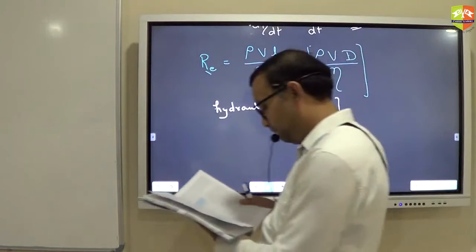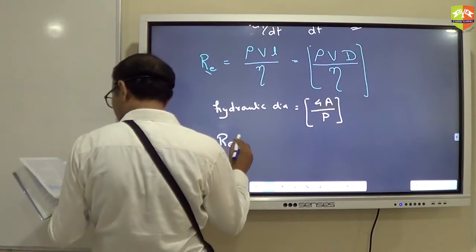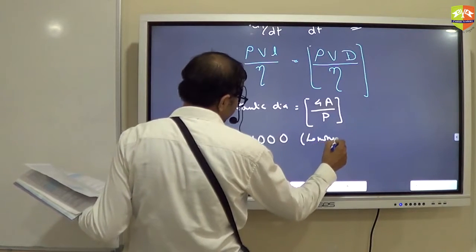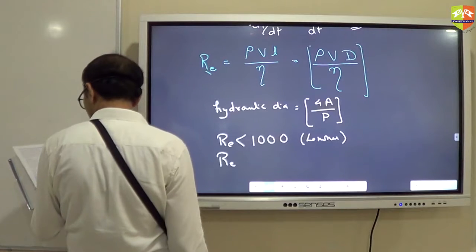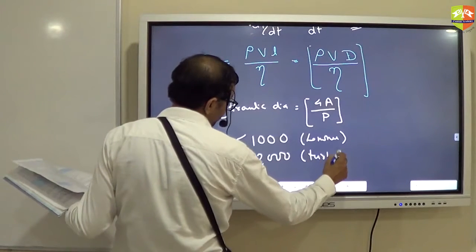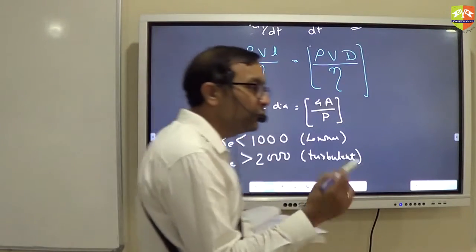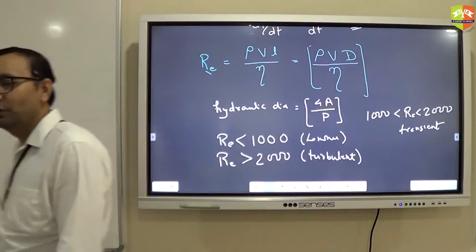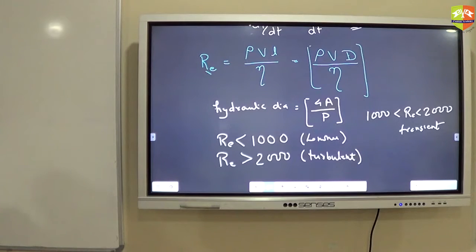Now here is a very simple thing. If Reynolds number is less than 1000, it is laminar. If Reynolds number is greater than 2000, it is turbulent. And between 1000 and 2000, it is called transition state—it is neither laminar nor turbulent. So there will be at times numericals only to check whether the flow is laminar or turbulent.